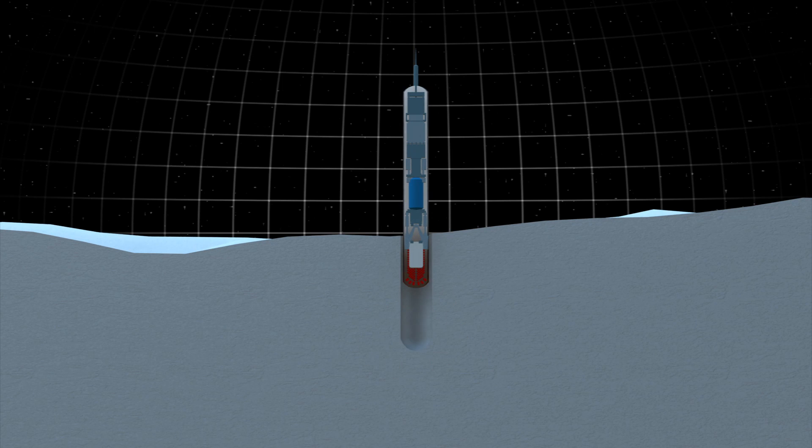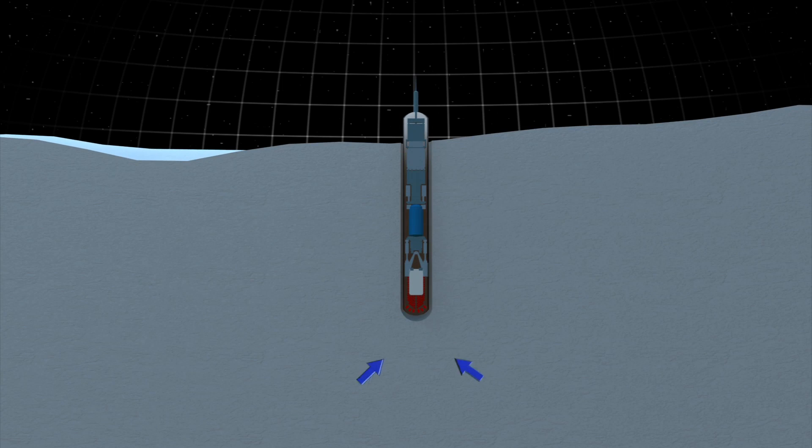The heated water melts a pocket in the ice, which the robot uses as an entry point to proceed deeper down into the crust.